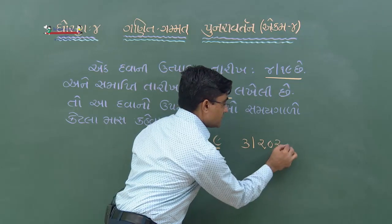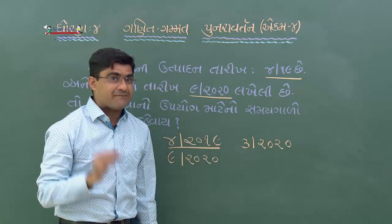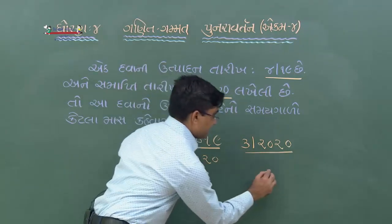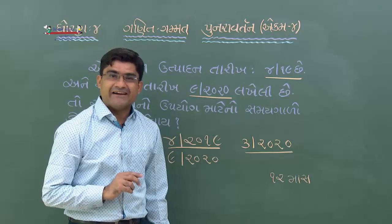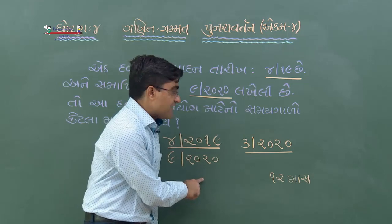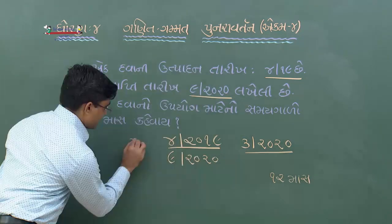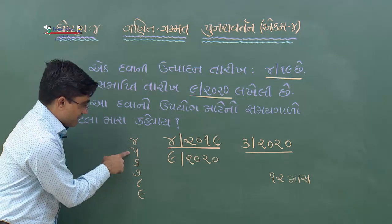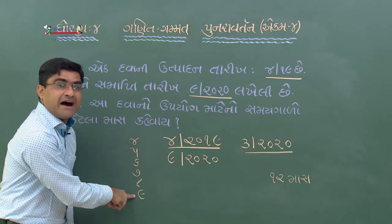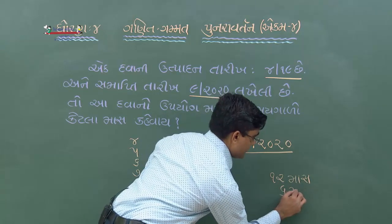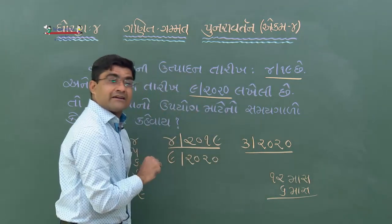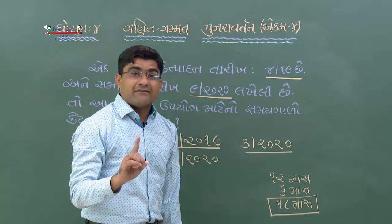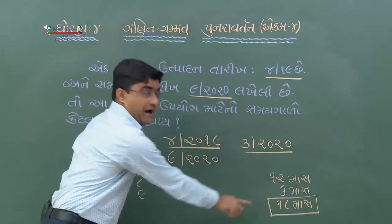4/2019 (એપ્રિલ 2019) થી 3/2020 (માર્ચ 2020) - 1, 2, 3, 4, 5, 6 - 6 + 6 = 12? ના - 1, 2, 3, 4, 5, 6 - કુલ 12 માસ. આ દવાનો સમય ગાળો 12 (અઢાર?) માસ. સ્પષ્ટ છે ને?